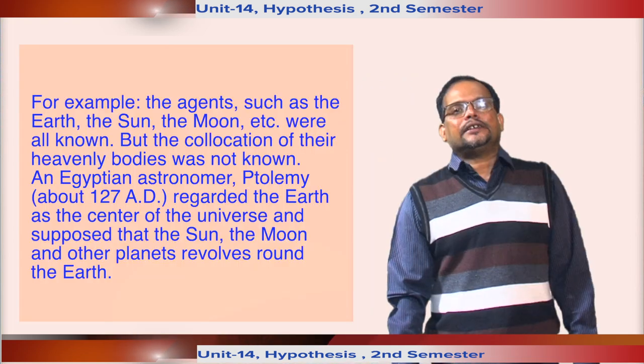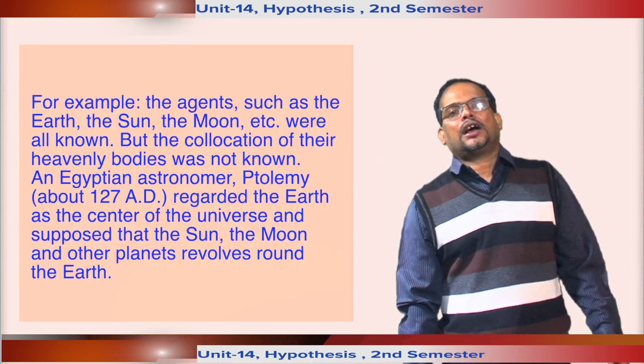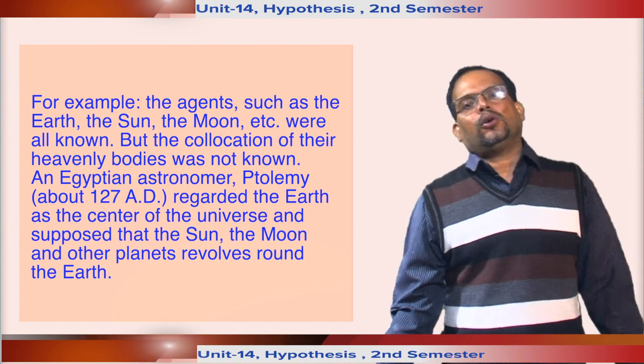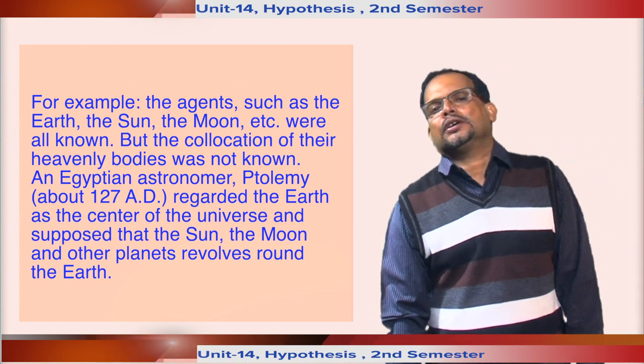You take an example: The agents such as the earth, the sun, the moon, etc. were all known. But the collocation of their heavenly bodies was not known.